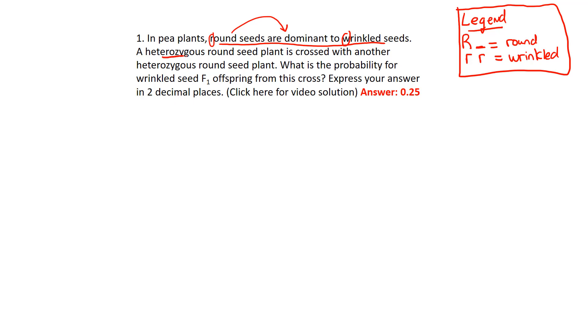A heterozygous round plant is crossed with another heterozygous round plant. So those are our two parents. Let's underline them and let's just on the side or above, wherever, let's put the genotypes.